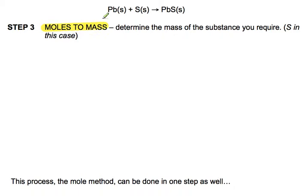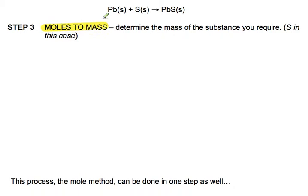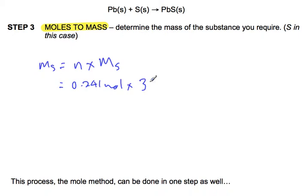The last step is a mole-to-mass conversion for our unknown, sulfur. For that we need the molar mass of sulfur. Mass of sulfur equals number of moles times molar mass: 0.241 moles of sulfur times 32.07 grams per mole equals 7.74 grams. That's three significant figures, based on our original mass of 50.0 grams given in the question. So that's the mole method shown in three steps.